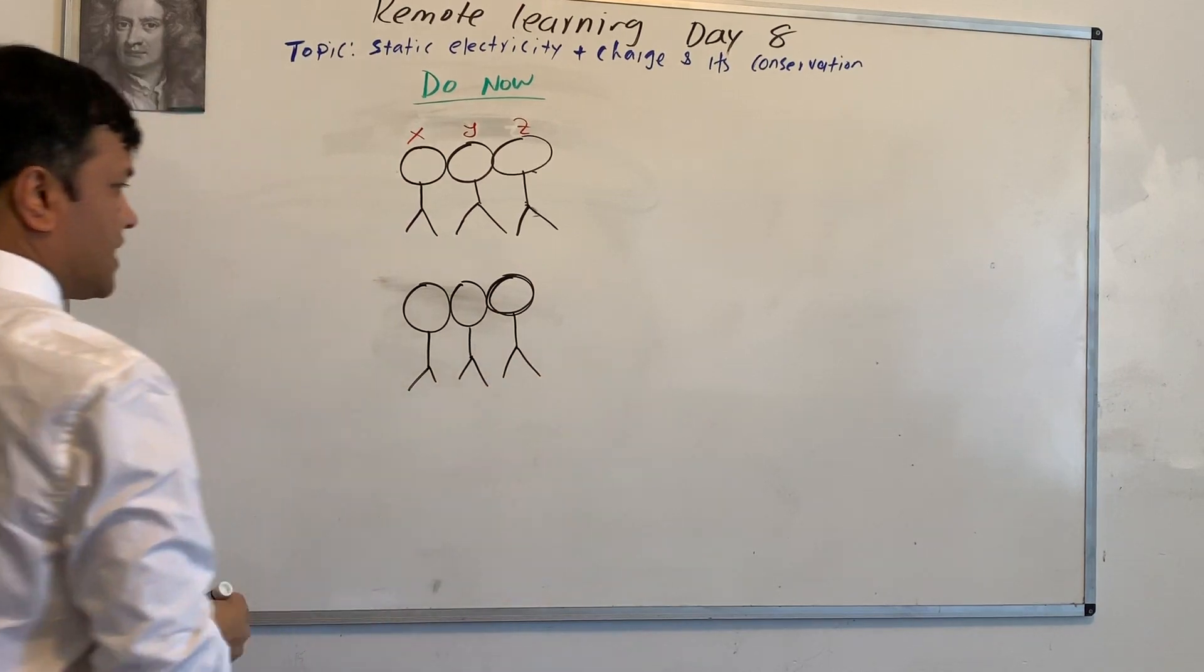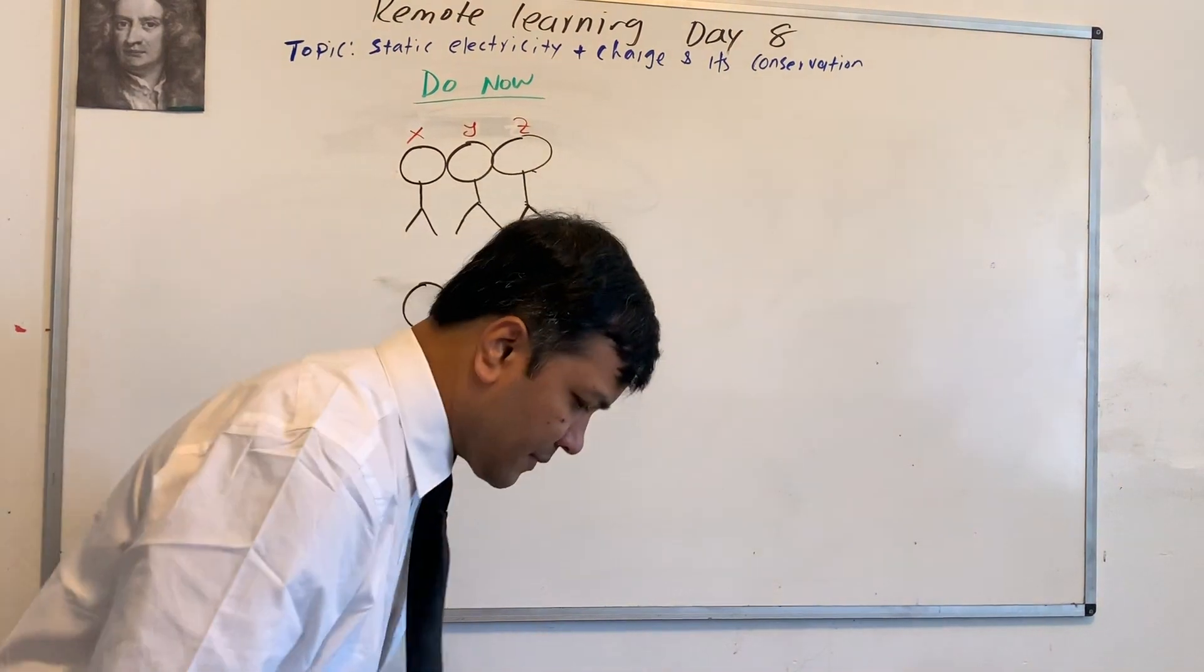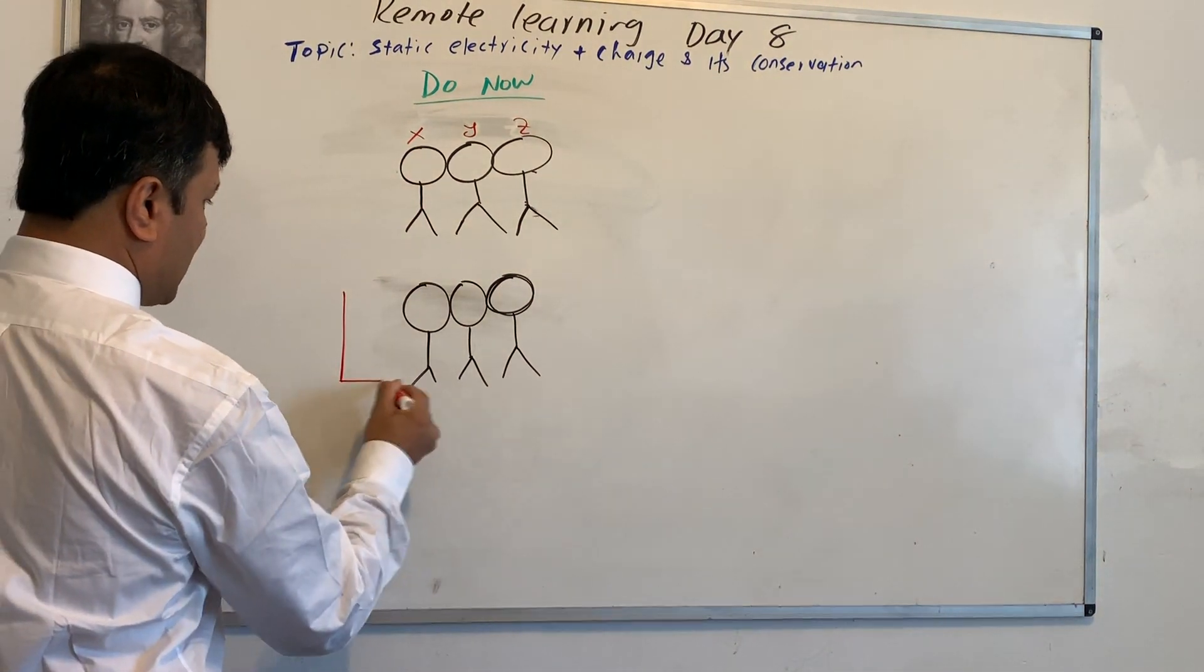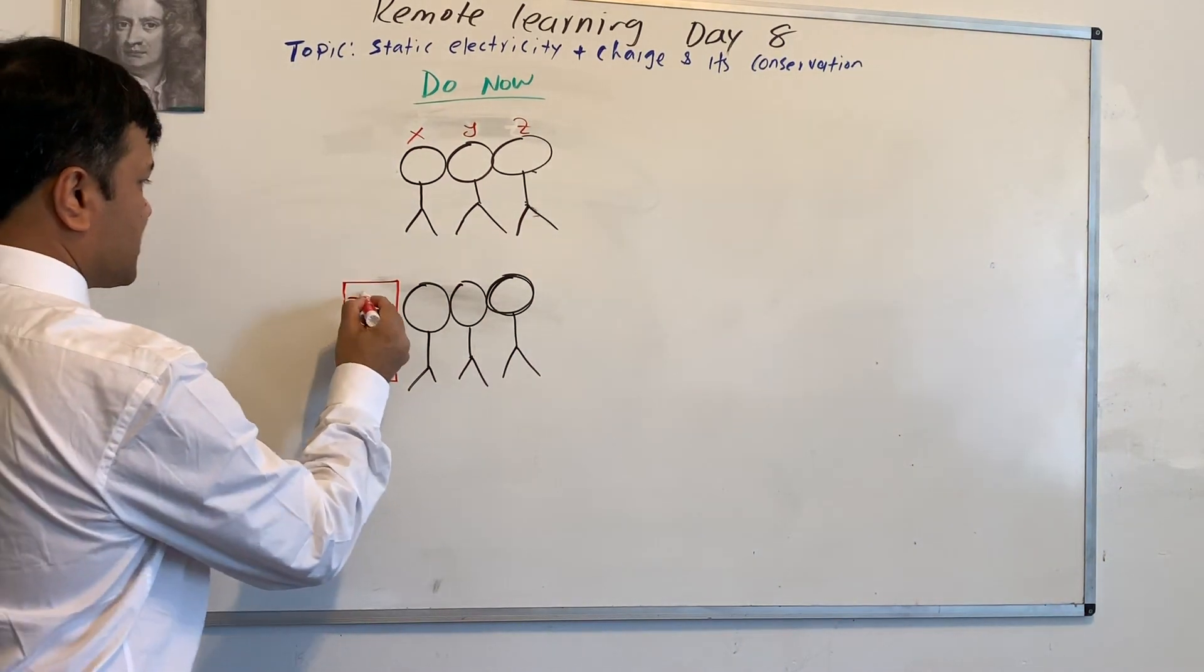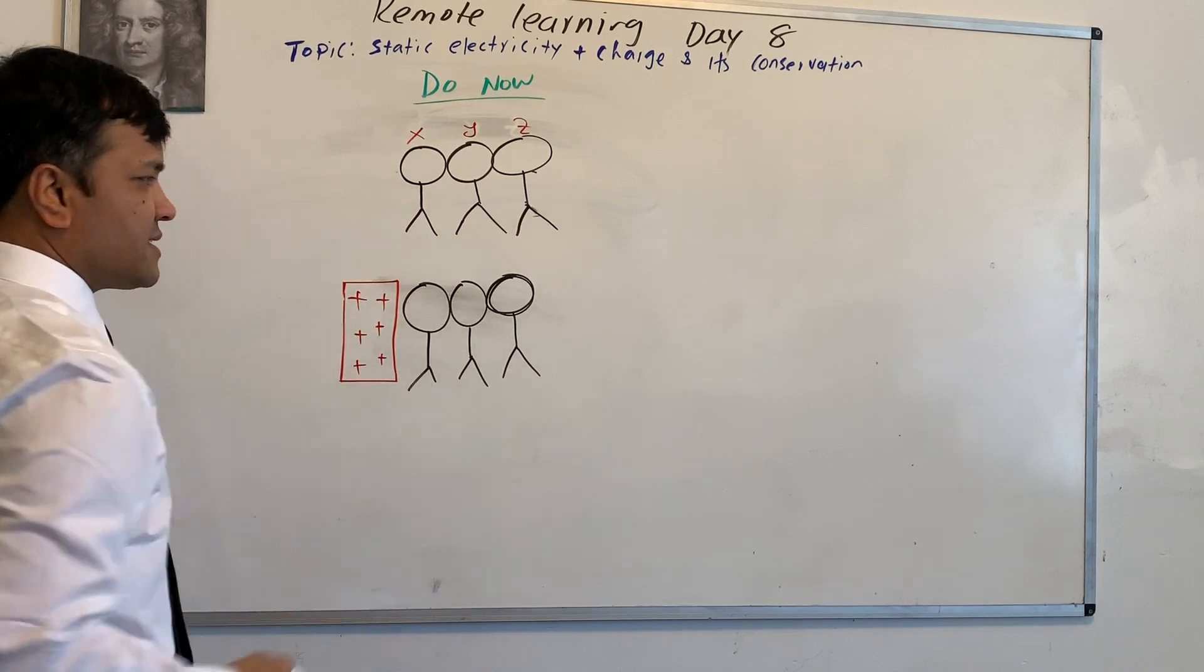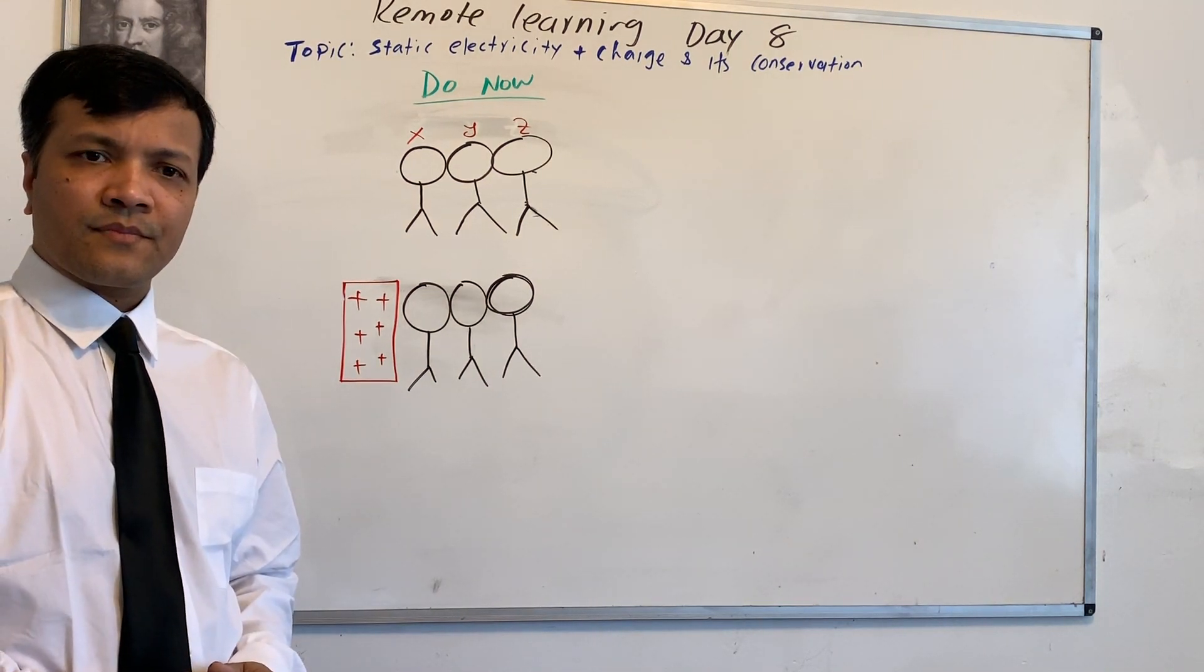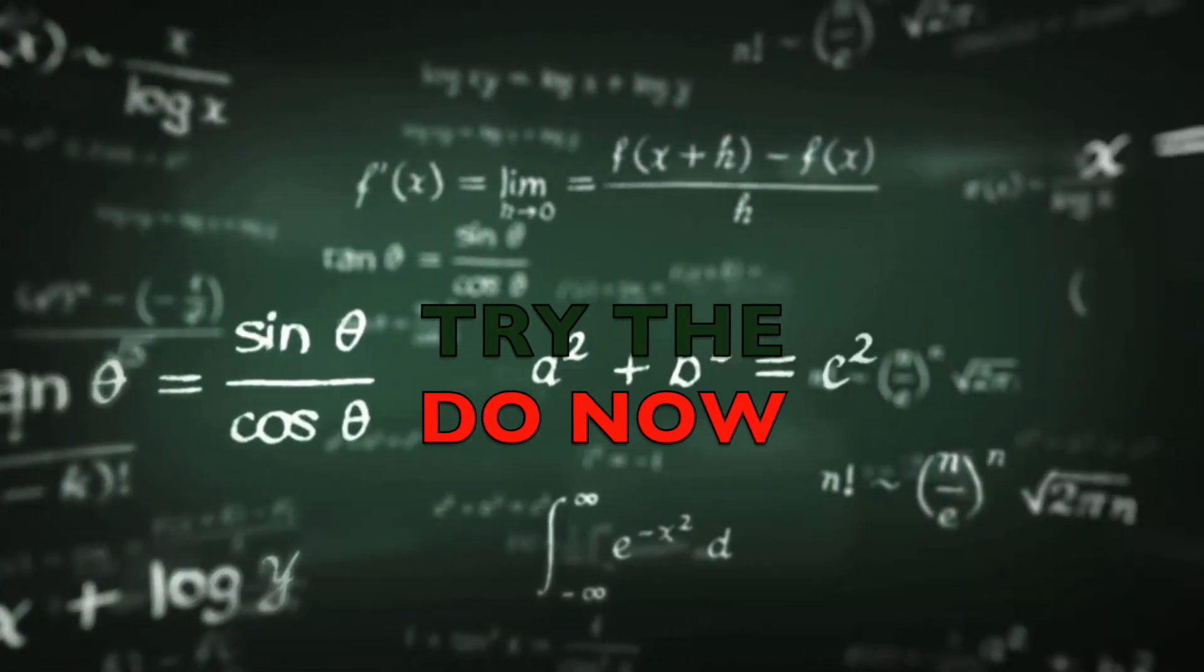What is the difference between Scenario 1 and Scenario 2? In Scenario 2, I'm going to have a positively charged rod very close to the sphere, positively charged. What is going to happen with this neutral metal sphere? Now pause the video and try your own.